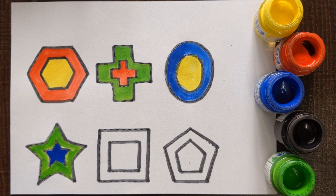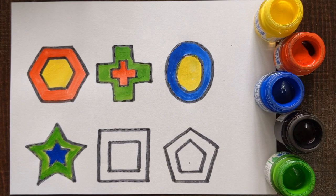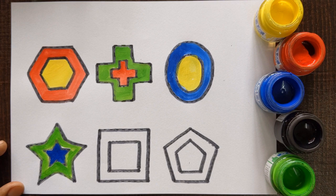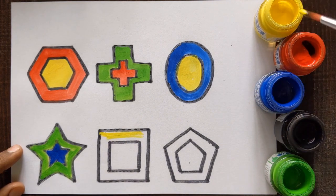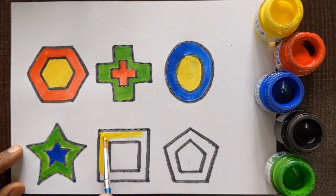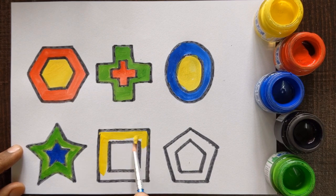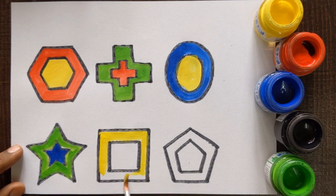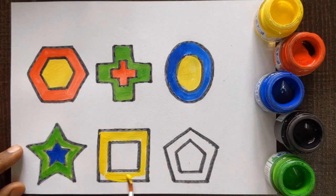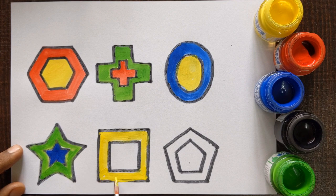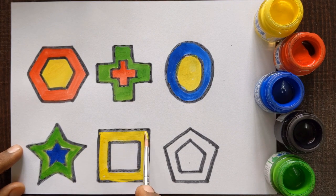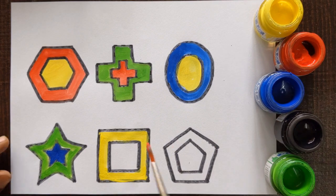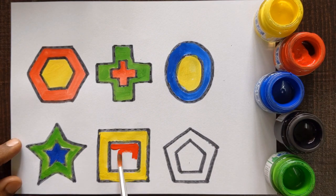Big square, yellow color. And small square, red color.